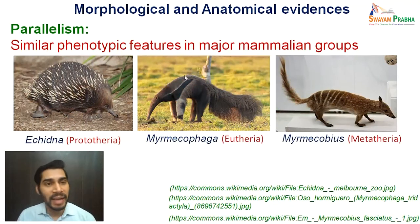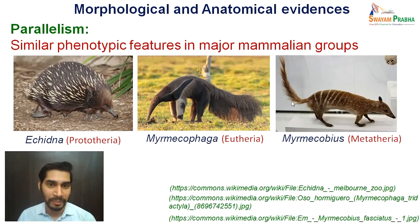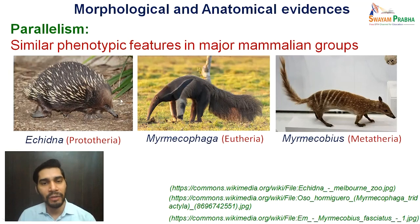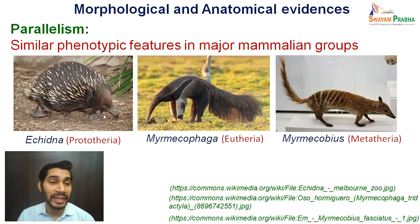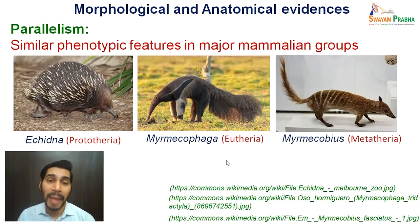Yet another example is the similarity in phenotypes of three different groups of class Mammalia — Prototheria, Eutheria, and Metatheria. As you can see, the similarity in terms of claws, snouts, and the long tongue that they possess. So again, this is an example of parallel evolution.